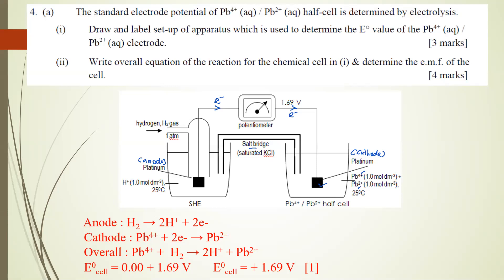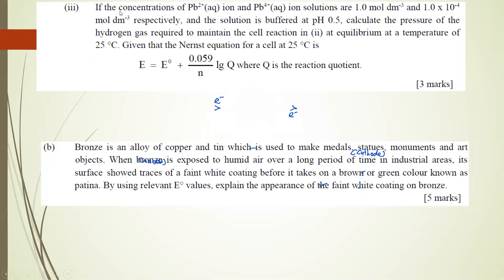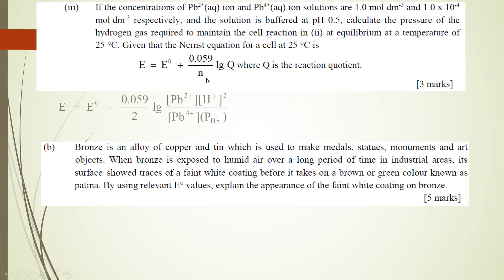Question 4a(3): if the concentration of Pb2+ is 1.0 mol/dm³ and Pb4+ is 1.0 × 10⁻⁴ mol/dm³, and the solution is buffered at pH 0.5, calculate the pressure of hydrogen gas needed to maintain the cell at equilibrium at 25°C. You are given the Nernst equation where Q is the reaction quotient. To apply the Nernst equation, E cell = E°cell − (0.059/2) log Q.